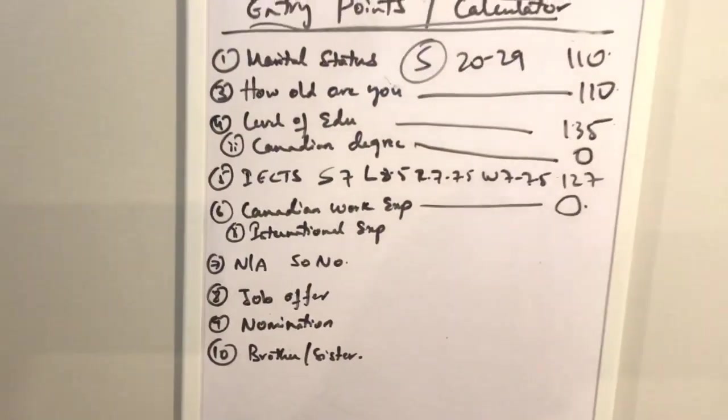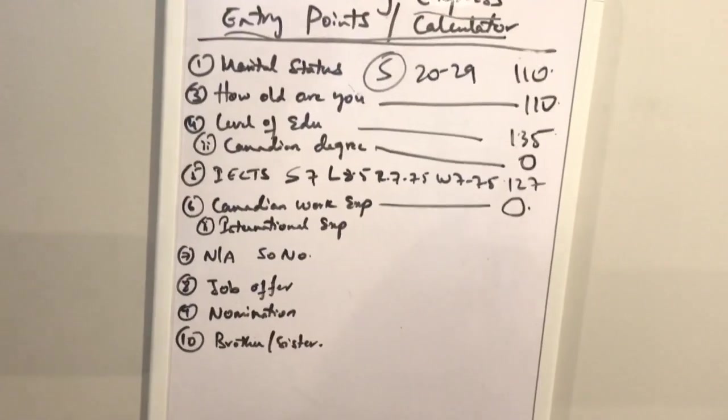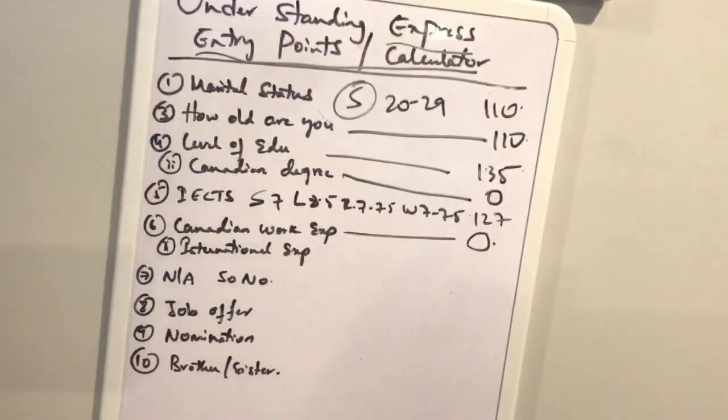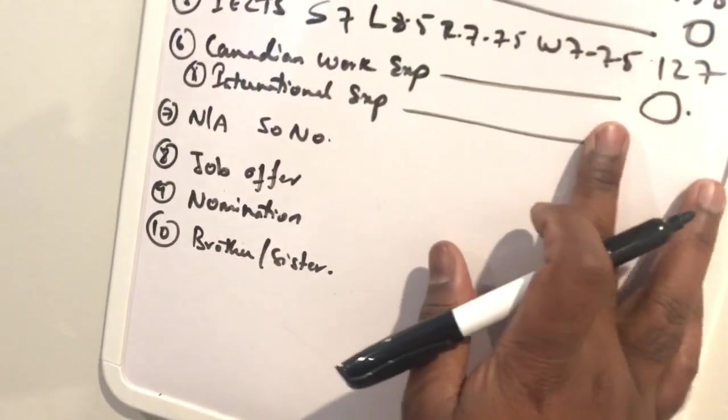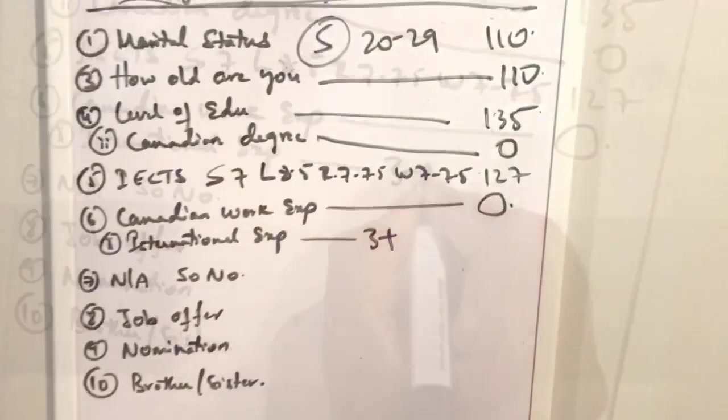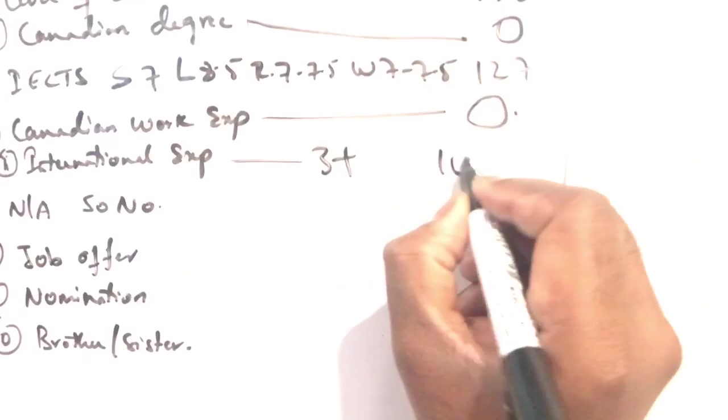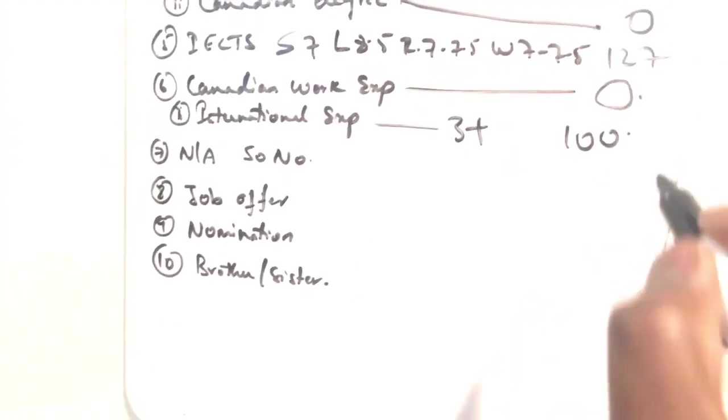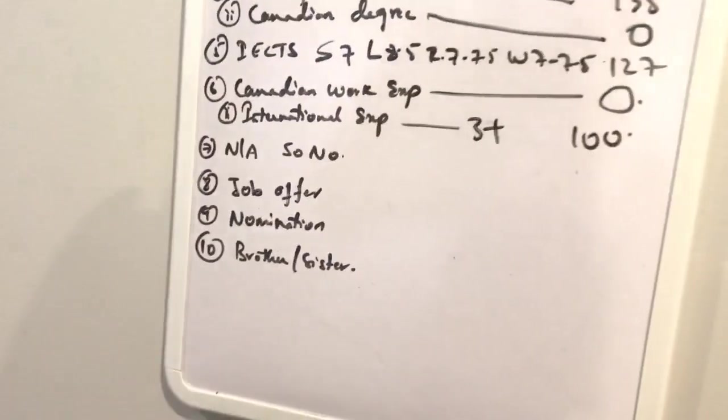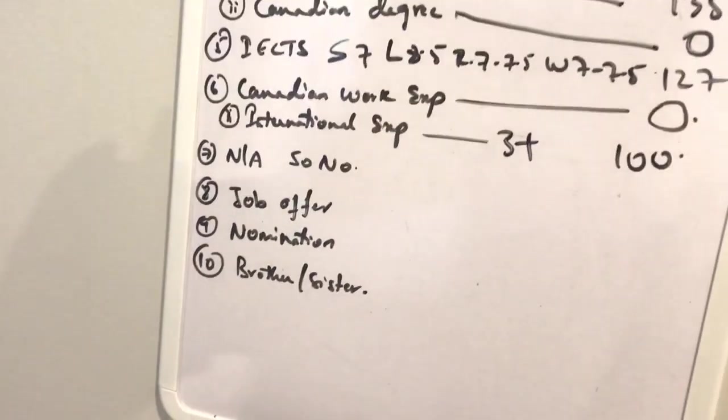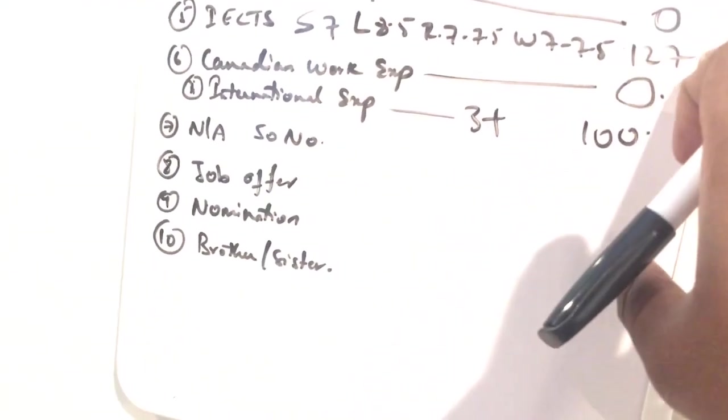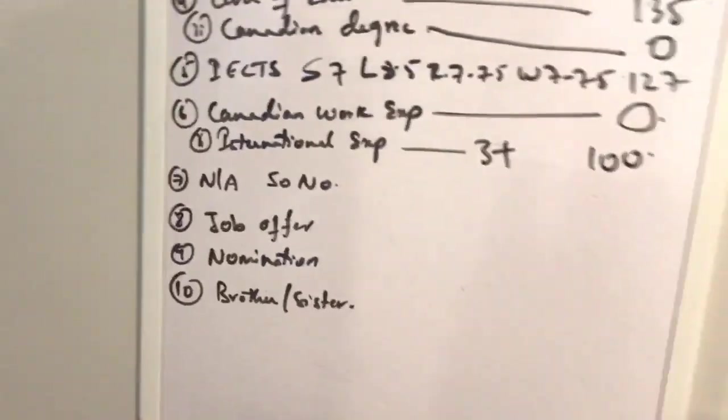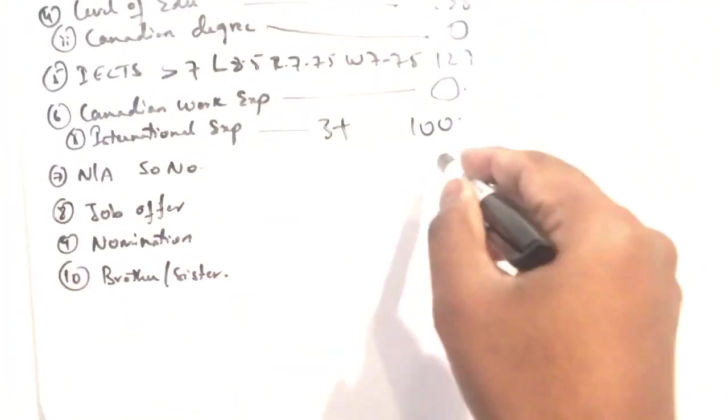Next, Canadian work experience. The second part is international experience. In the last 10 years, how many years of experience? Skill trade experience, you haven't had. So 3 plus years experience, you can get a maximum of 100 points. 100 points, it'll be 50 for your experience and 50 plus your education plus work experience, or 50 points for your experience and 50 points for your language ability plus experience. You can get a maximum of 100 points.